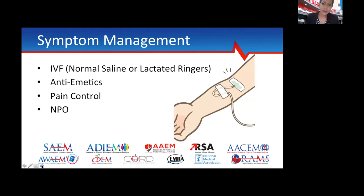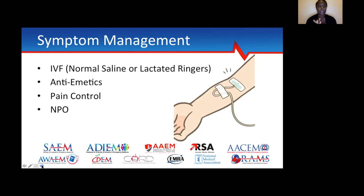Addressing her symptoms: she's in quite a bit of pain with nausea and hasn't been eating much, so give her a liter of normal saline bolus — no contraindications to fluids. For the nausea, give ondansetron. For pain control, four milligrams of morphine. Make her NPO pending results, in case she has a surgical issue.